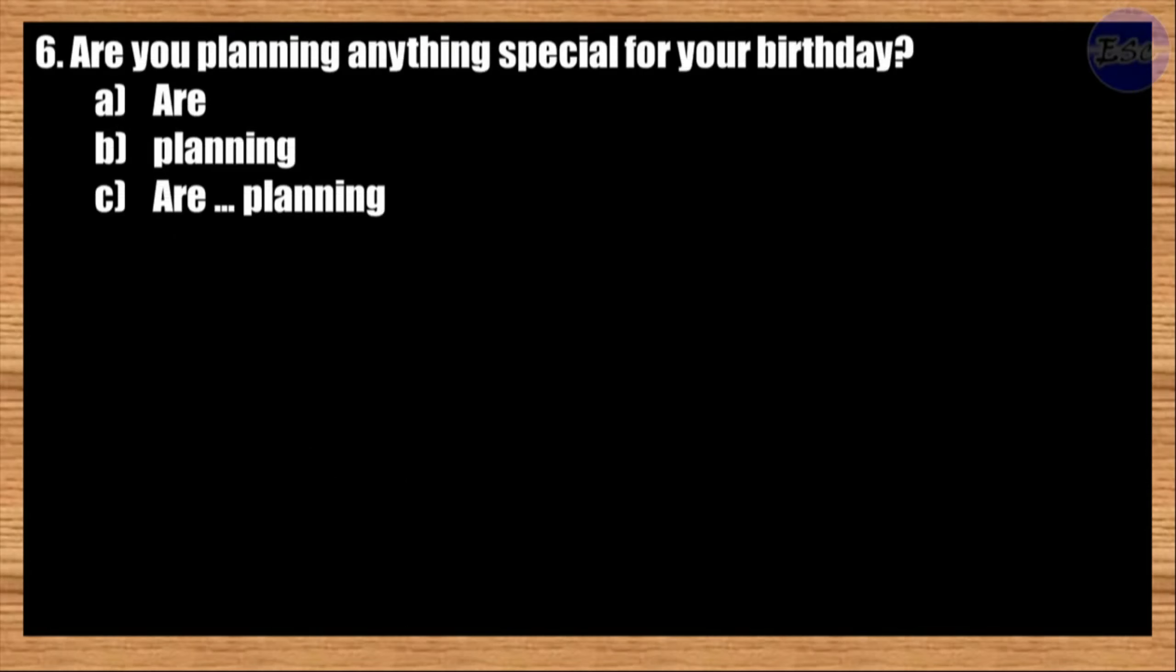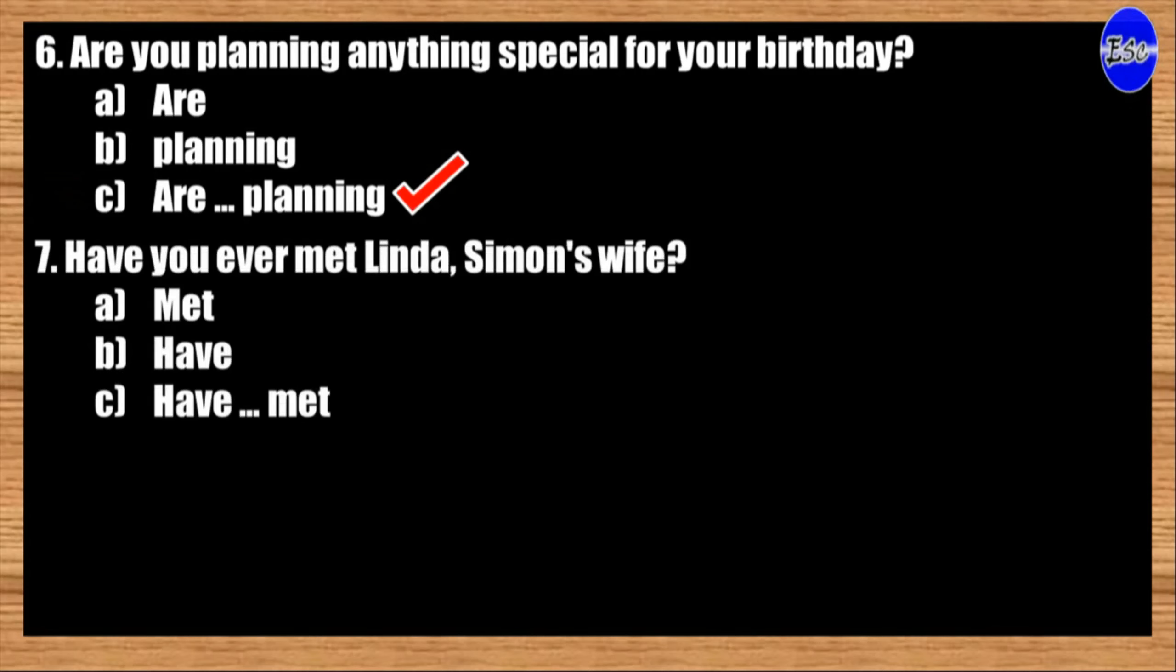6. Are you planning anything special for your birthday? A. are B. planning C. are planning. 7. Have you ever met Linda, Simon's wife? A. Met B. Have C. Have met.